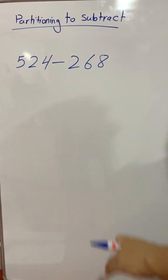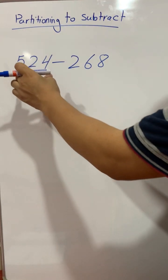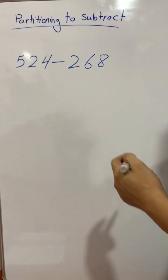To solve this subtraction problem, we use partitioning. We partition the numbers into hundreds, tens, and ones and then subtract.